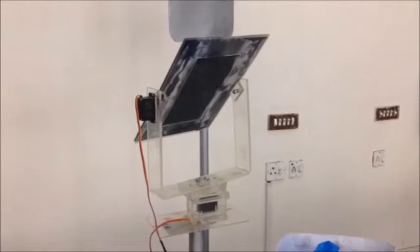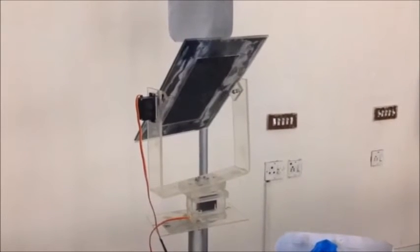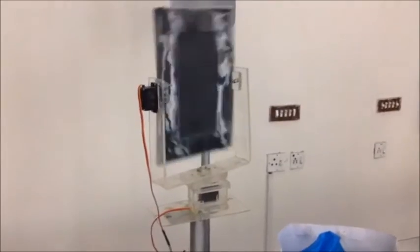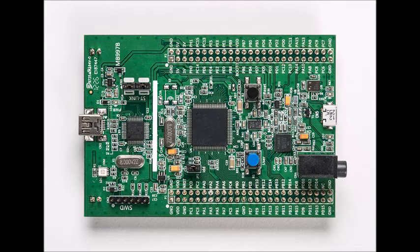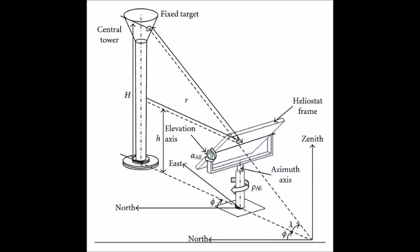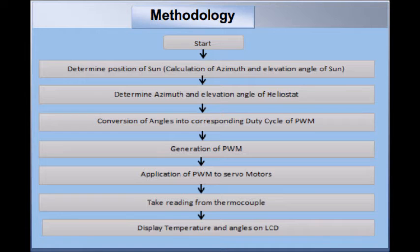The second step is calculation of the position of the Heliostat. In this step, we performed calculations and implemented them in the STM32F4 microcontroller to determine the position of the Heliostat, taking the sun's azimuth and elevation angle as input, then calculating the corresponding azimuth and elevation angle of the Heliostat.